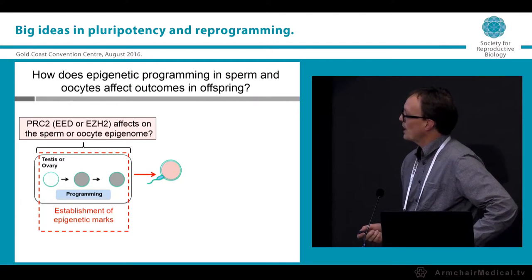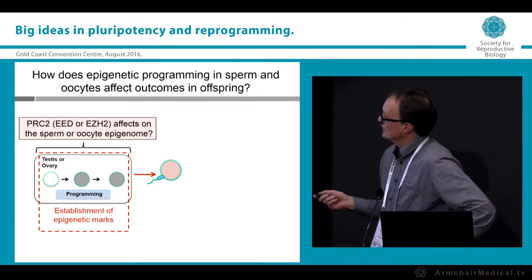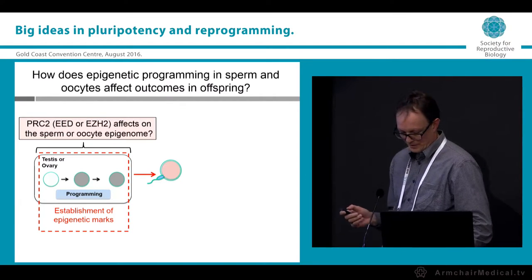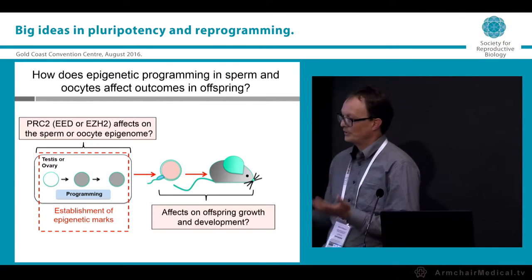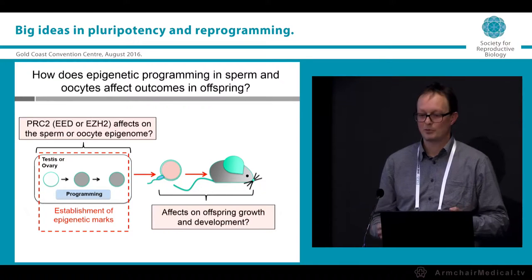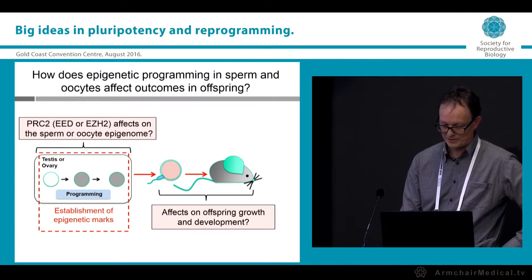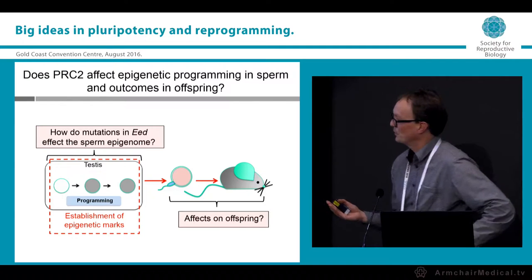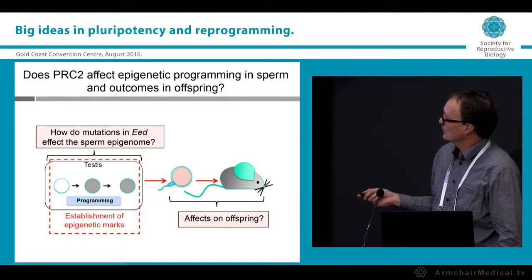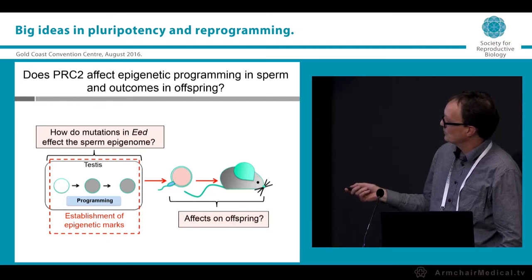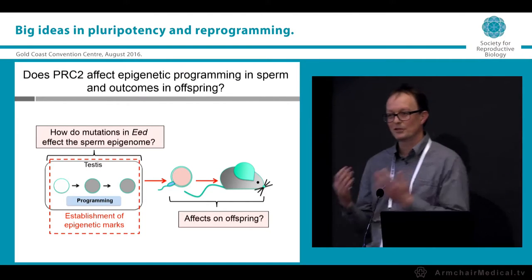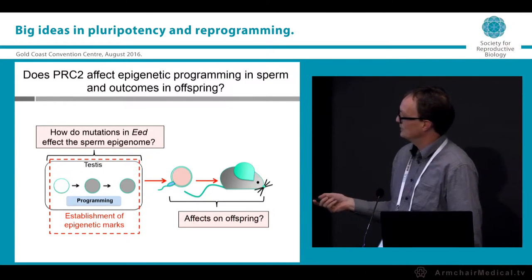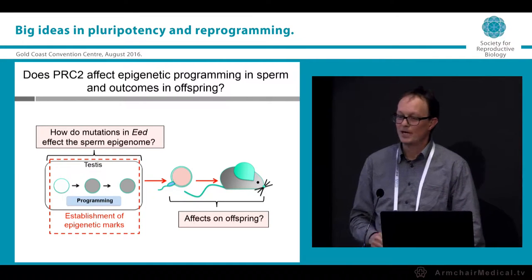We initially wanted to ask whether altering Polycomb function in the developing germline would affect outcomes in the offspring, which would indicate a heritable epigenetic process underpinning development in the following generation. The first experiment used males with mutations in the EED gene — a critical component of PRC2 — and we looked for differences in offspring in the following generation using these males mated to wild-type females.